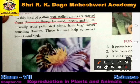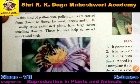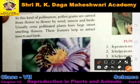Cross-pollination is by wind, insects, and birds. Is tarike ke pollination mein jo pollen grains hain woh wind ke through ek flower se dusre flower mein ja sakte hain, insects ke through ja sakte hain, aur birds ke through bhi ja sakte hain.